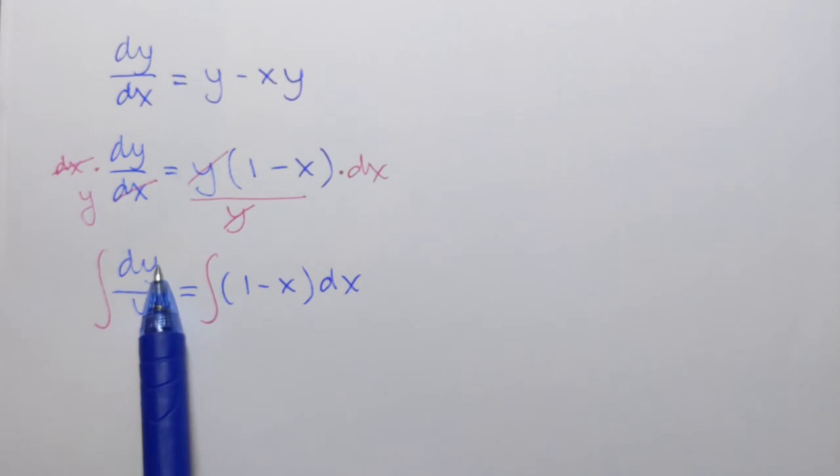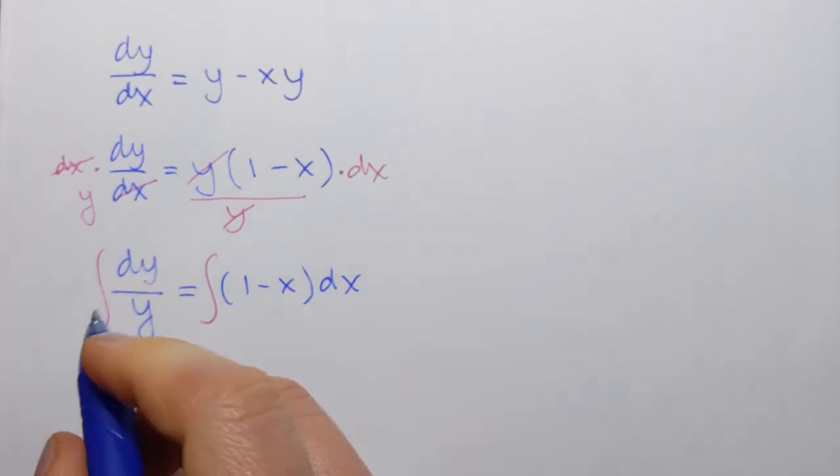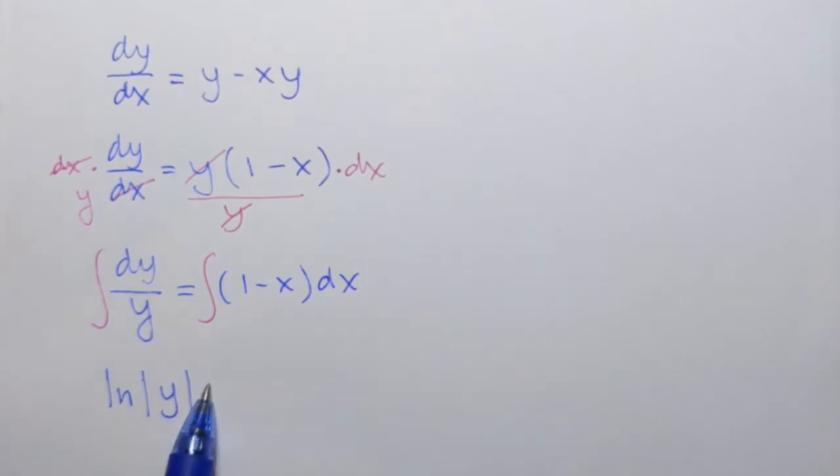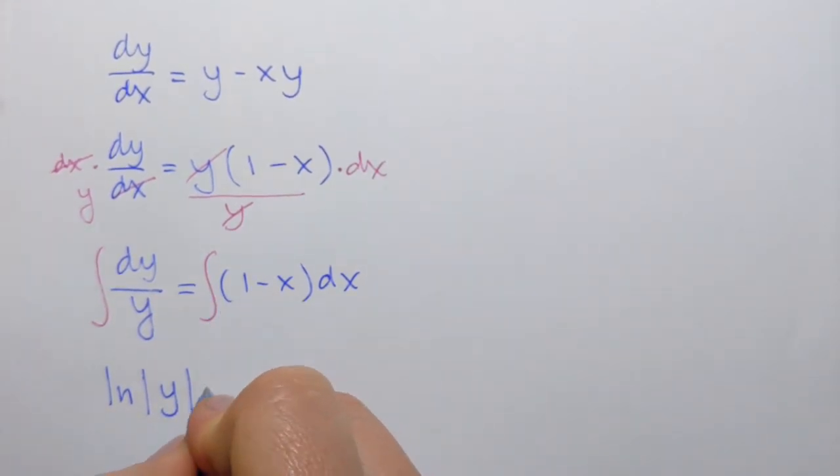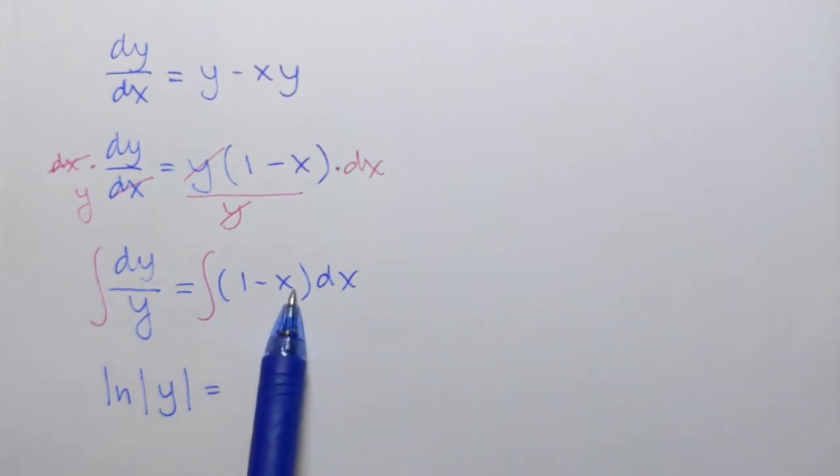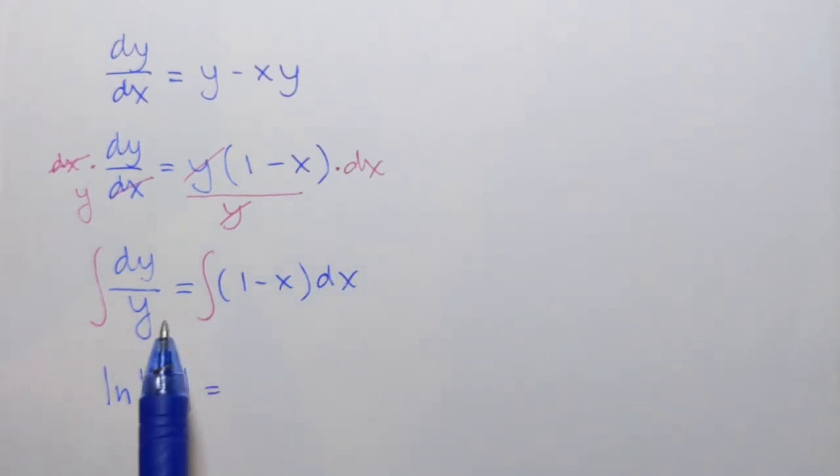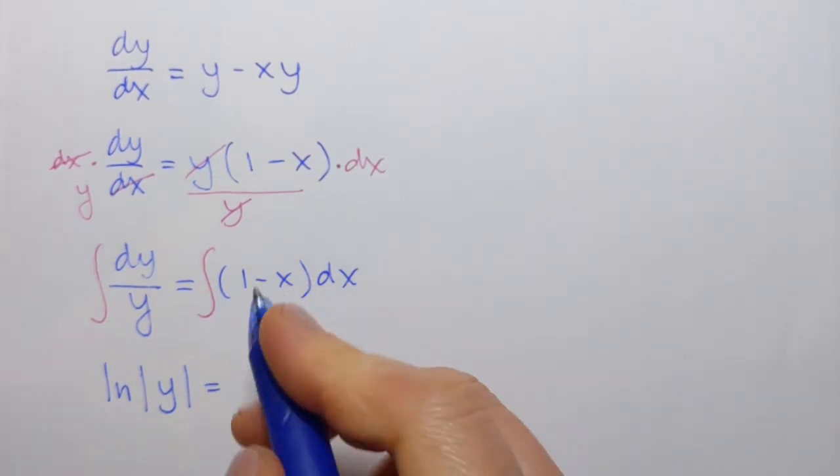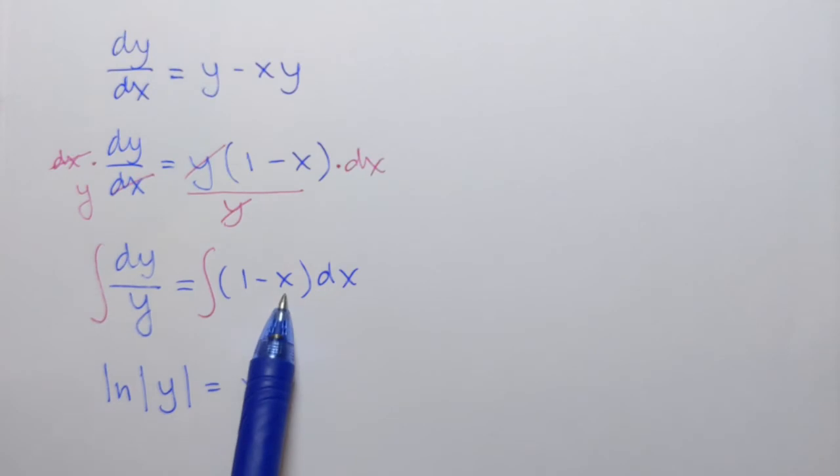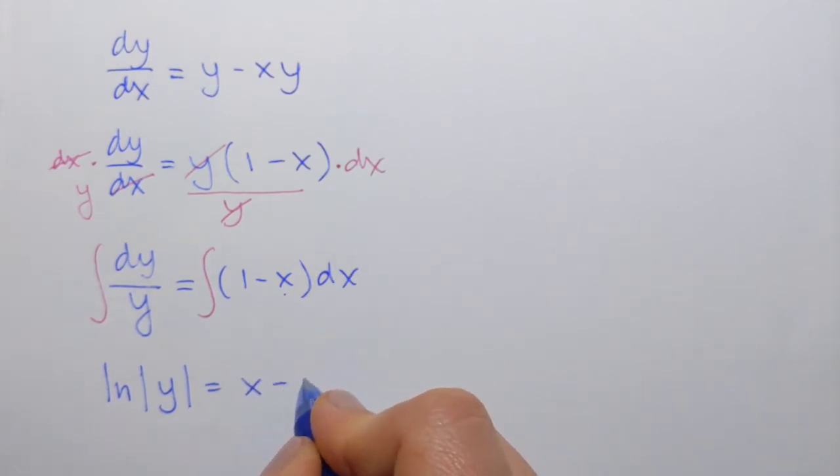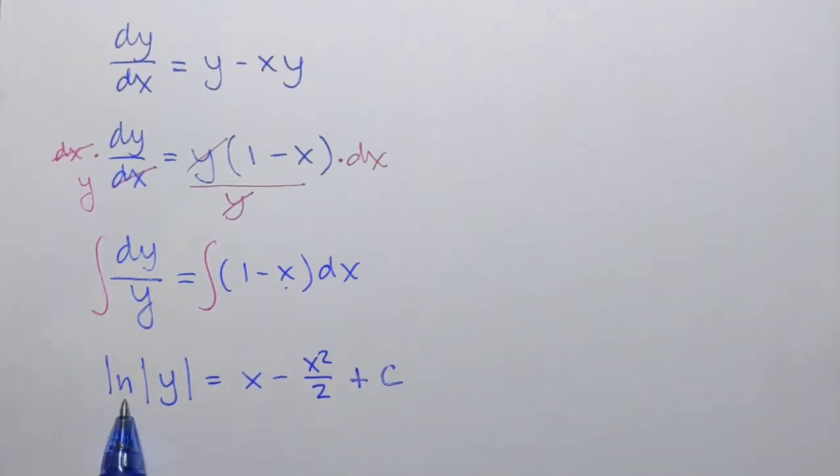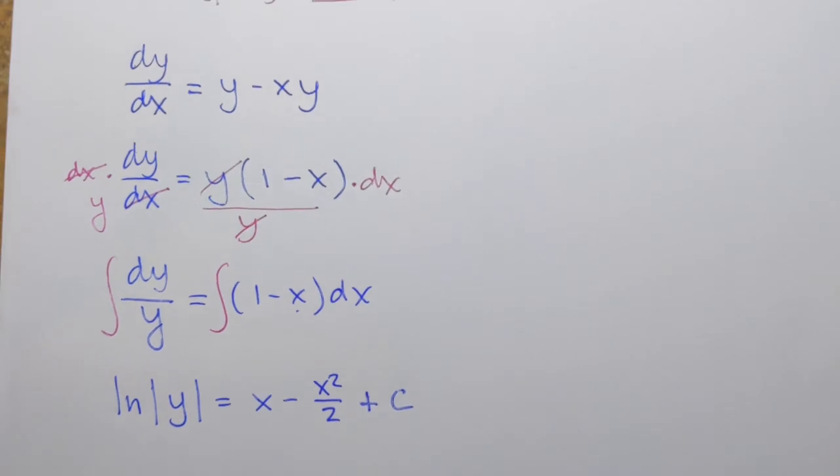Integral of dy over y is ln of absolute value of y. I'm not going to put constant here. I'll put it on the right-hand side. And here since it's a difference when we're integrating we can just integrate each term. Integral of 1 is x and integral of x is x squared over 2 plus c. Okay, so that is solution to the given differential equation.